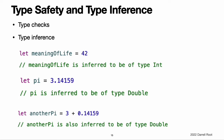Type inference is particularly useful when you declare a constant or variable with an initial value. This is often done by assigning a literal value to the constant or variable at the point that you declare it. A literal value is a value that appears directly in your source code, such as 42 and 3.14159. For example, if you assign a literal value of 42 to a new constant without specifying what type it is, Swift infers that you want the constant to be an Int, because you have initialized it with a number that looks like an integer. Likewise, if you don't specify the type for a floating point literal, Swift infers that you want to create a Double. Swift always chooses Double rather than Float when inferring the type of floating point numbers. If you combine integer and floating point literals in an expression, a type of Double will be inferred from the context.